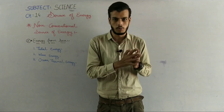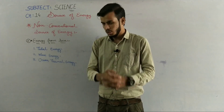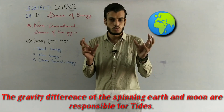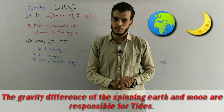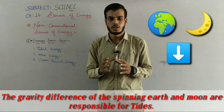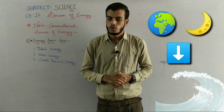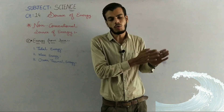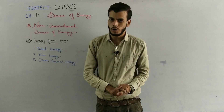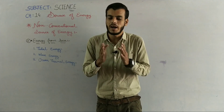Let's see first - tidal energy. Earth and moon दोनों के जो spinning rotation है, उसके वज़े से gravitational difference create होता है। यह gravitational difference ocean के water को move करता है, जिसकी वज़े से दिन में दो बार ocean का water outside आता है as a high tide और वापिस से inside जाता है as a low tide.